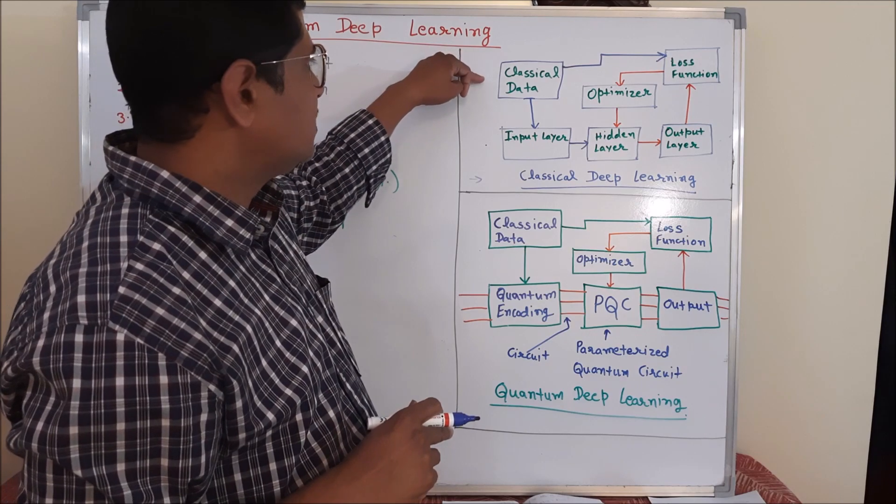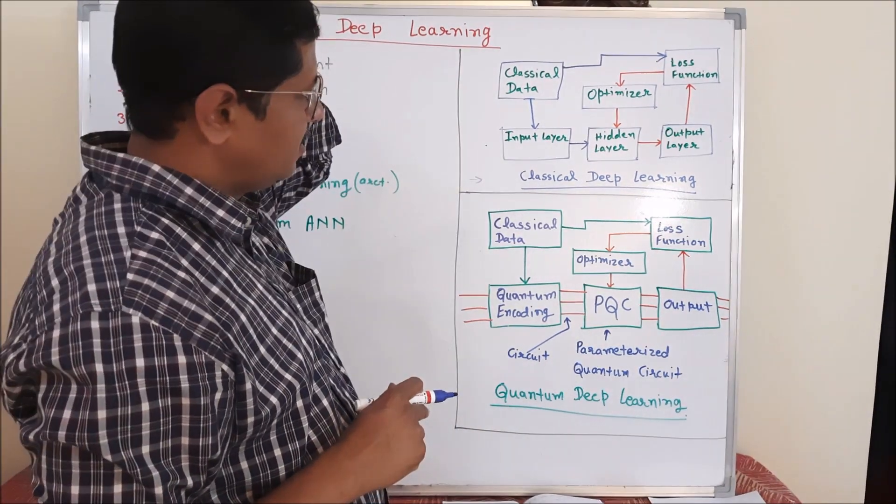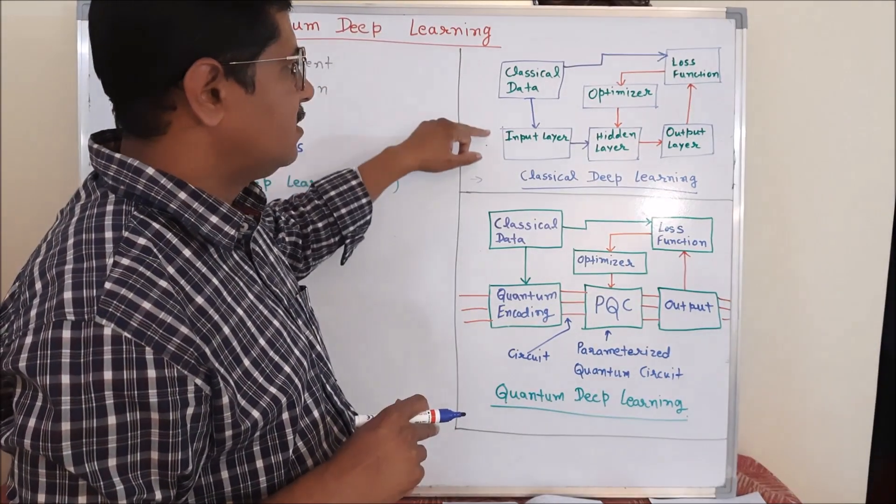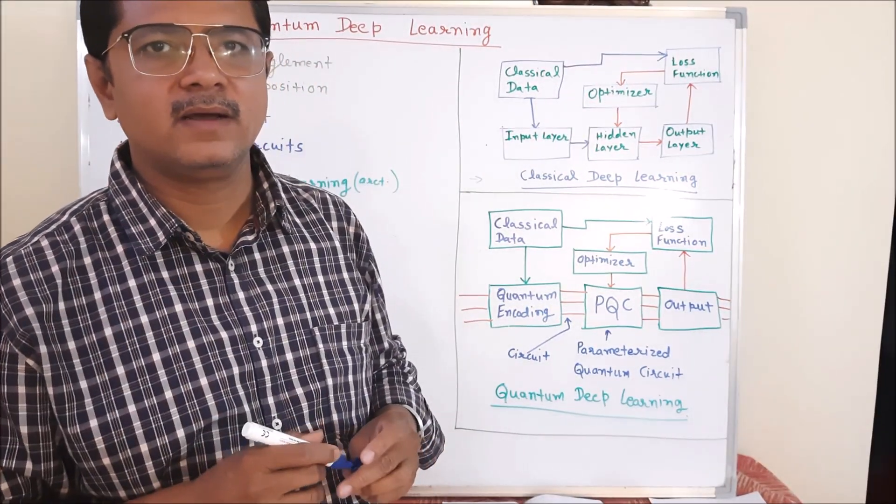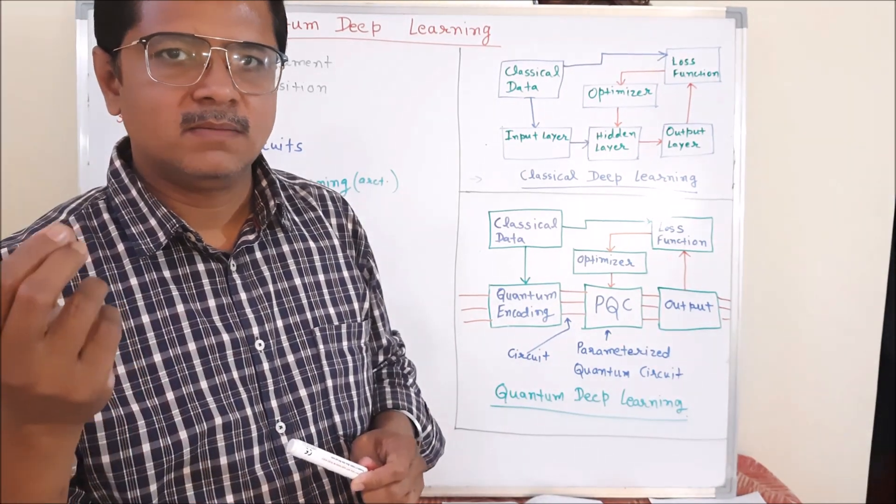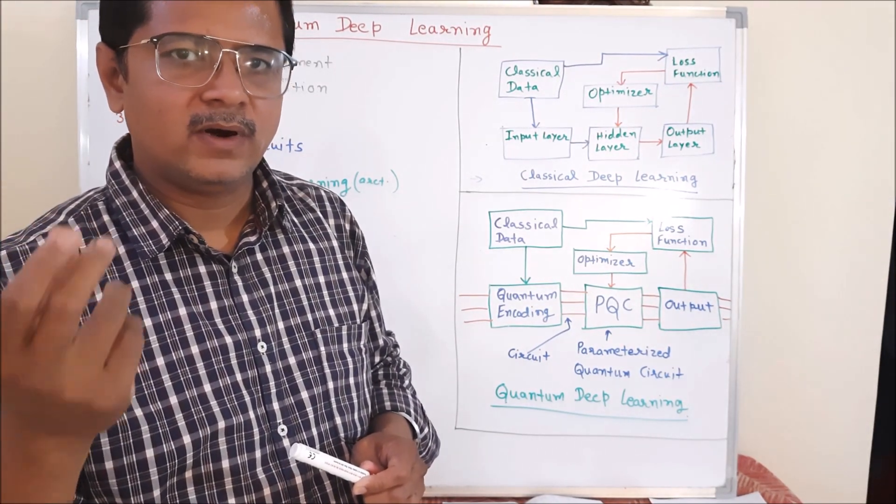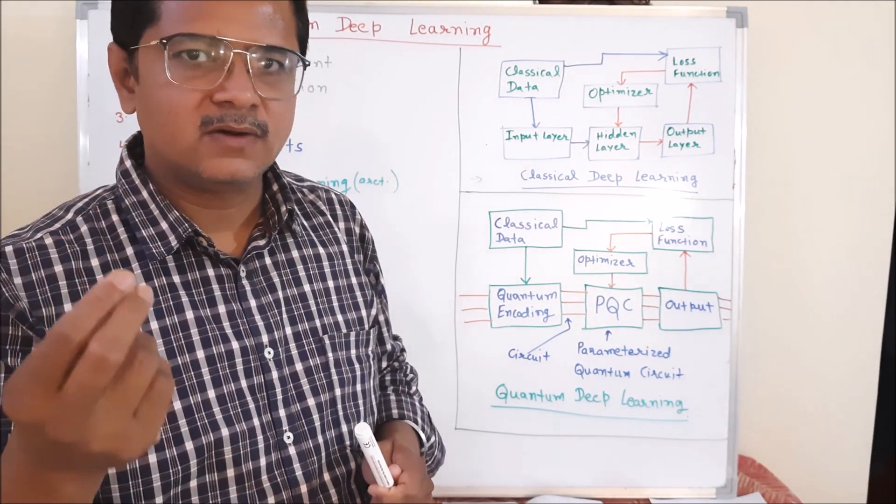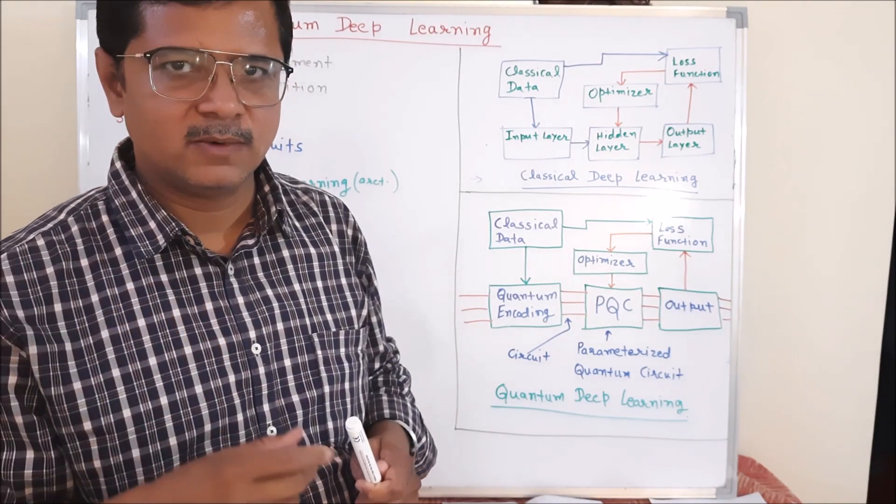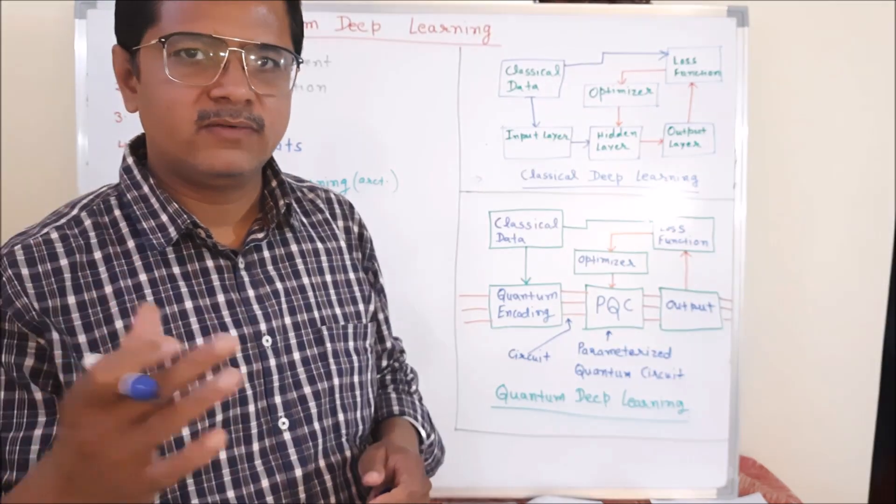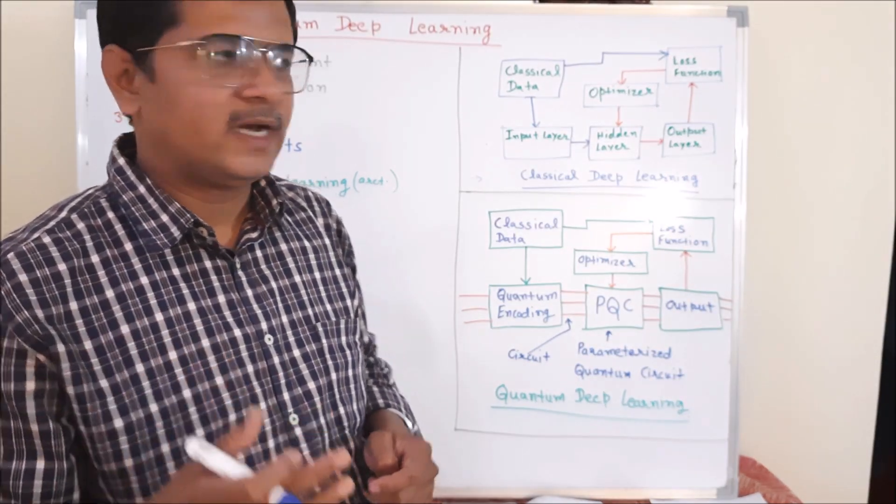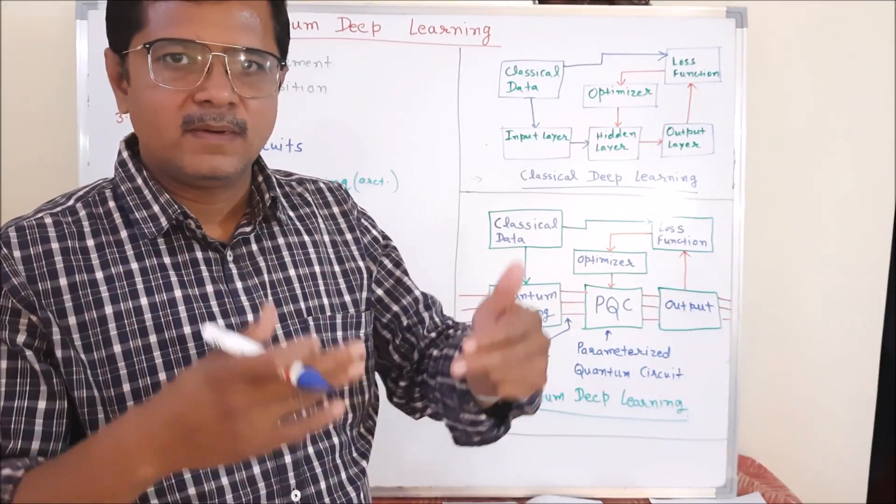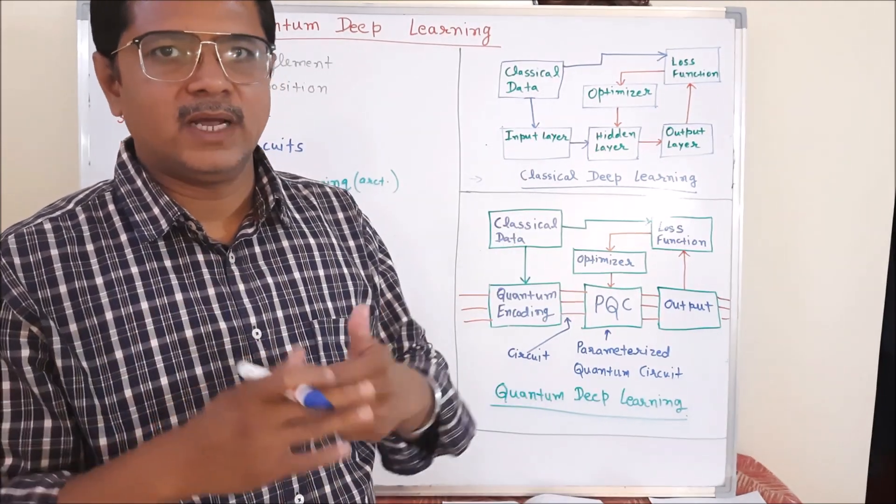In the classical deep learning architecture, we pass the classical data to the input layer. The input layer contains some one-hot encoding, embeddings, position encoding, for example in transformer, and some other information. Generally we attach the input data and keep it in the input layer.